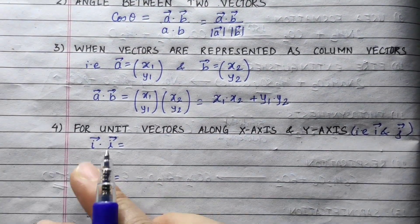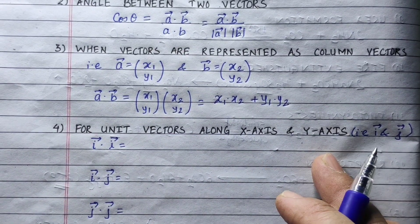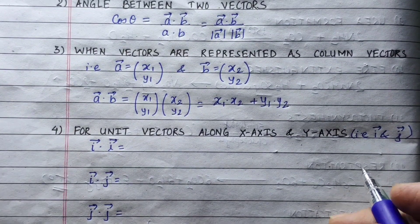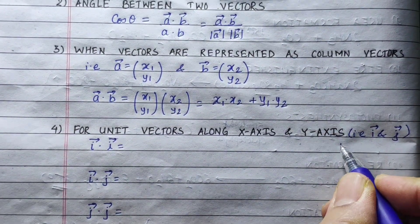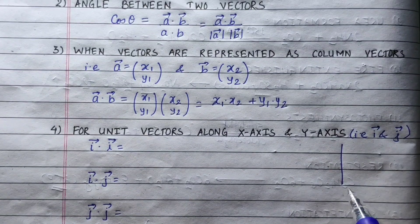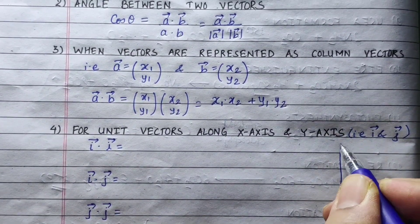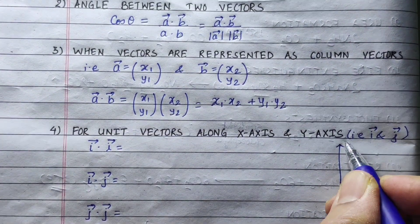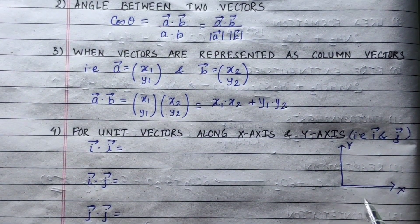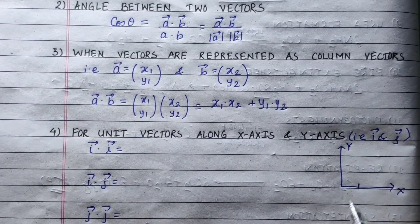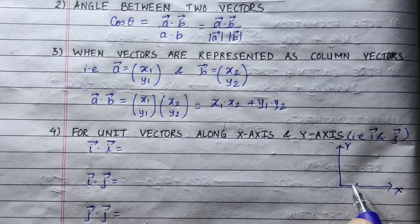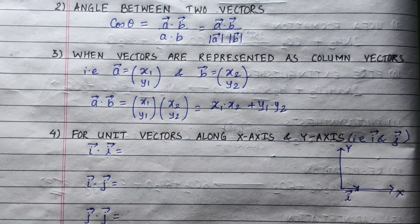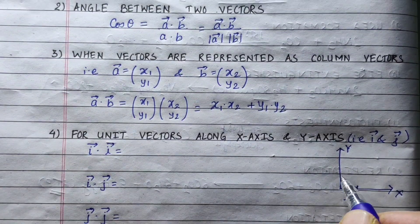Now, for unit vectors along the x-axis and y-axis, we have i vector and j vector. We can use unit vectors along the coordinate axes. The x-axis has magnitude 1, so the unit vector along the x-axis is i. We represent i as the column vector (1, 0) and j as the column vector (0, 1).